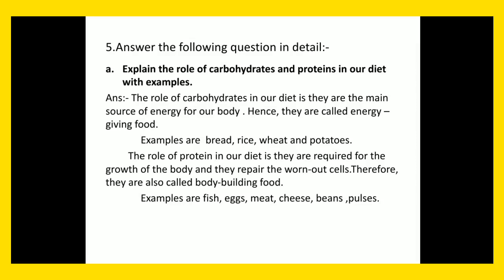Answer the following question in detail. Number 8: Explain the role of carbohydrates and proteins in our diet with examples. Answer: The role of carbohydrates in our diet is they are the main source of energy of our body. Hence, they are also called energy giving food. Examples are bread, rice, wheat and potatoes.